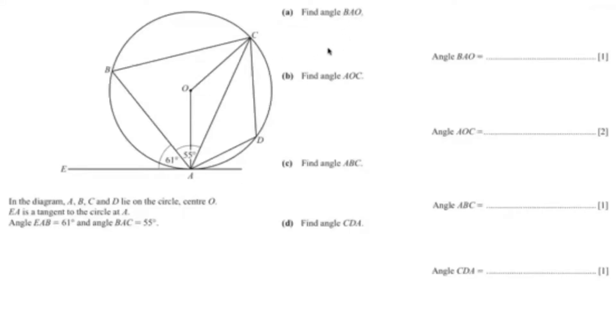In this first question, they want us to find angle BAO. Angle BAO is right over here. As you can see, this is a right angle, so it is 90 degrees.